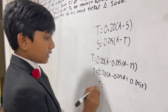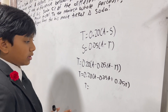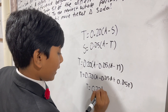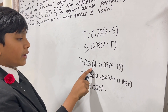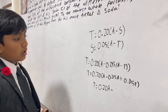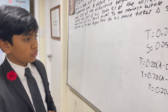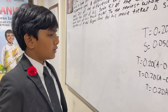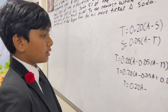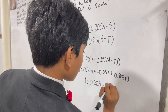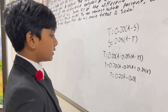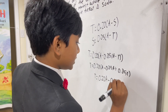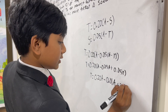So we have T equals 0.20A, and then minus — what is 0.20 times 0.05? Well, that would be 0.01, because 0.20 times 5 is 1. So this would be 0.01, making it A plus 0.01T.